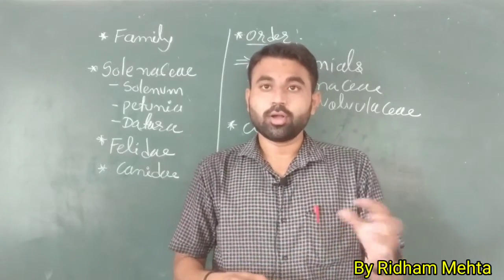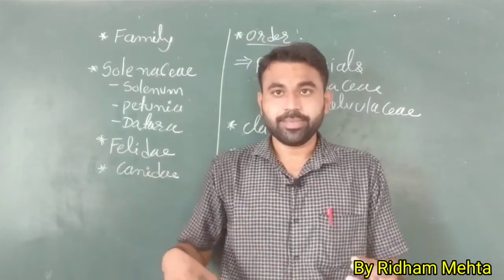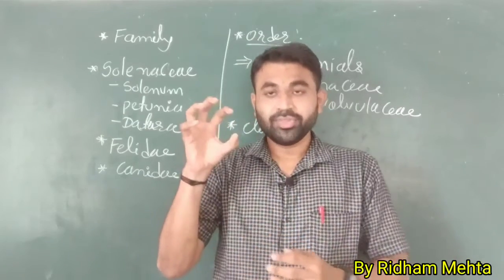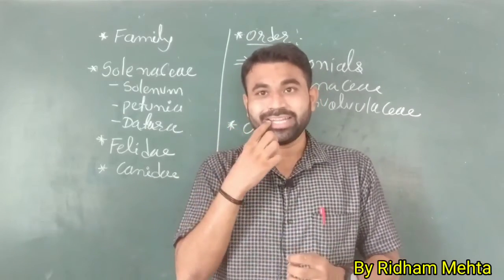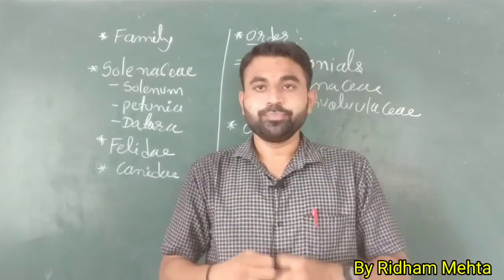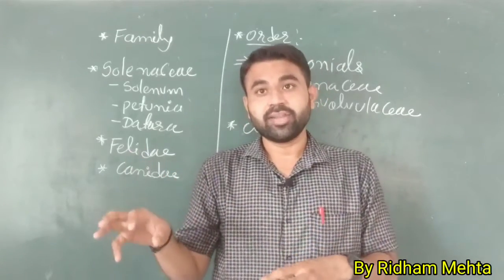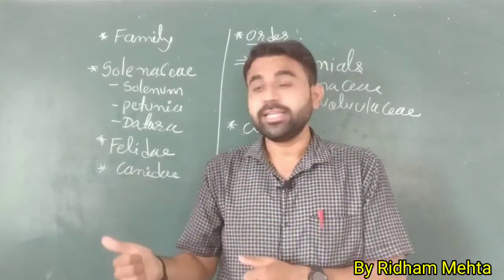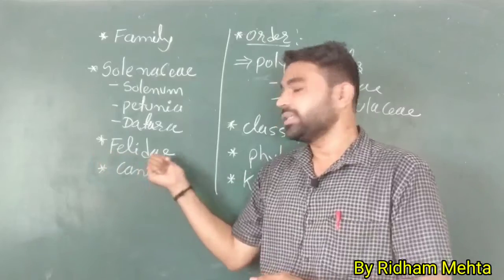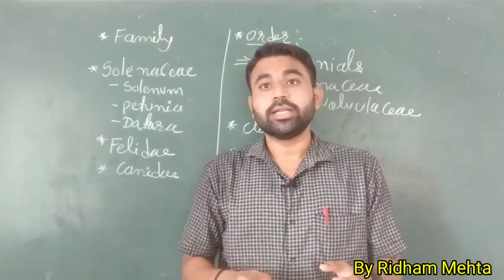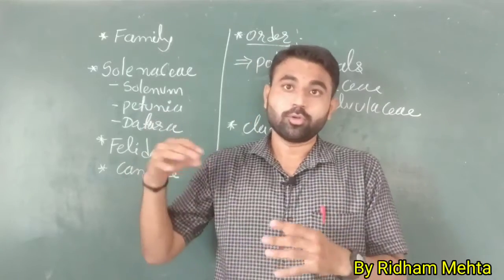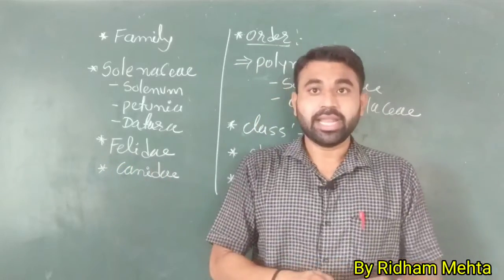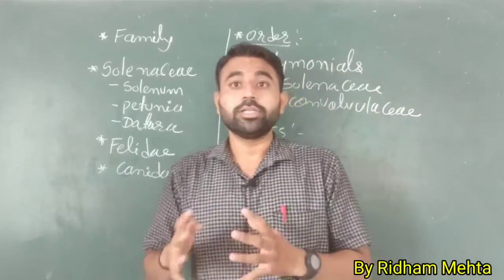When you talk about the cat family, all characters are the same in different cats — like they have claws, they have canine teeth and incisor teeth. When you discuss the cat family, they are all included in the same family called Felidae. Felidae is the cat family. All cats are included in the Felidae family — both the big carnivores like lions and tigers and the small cats as well.